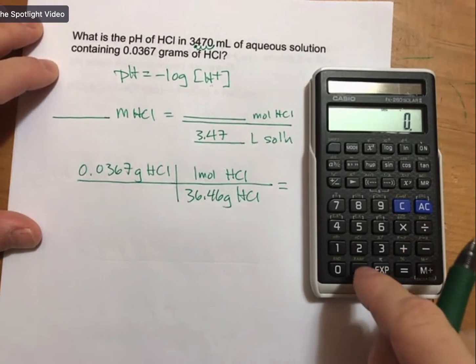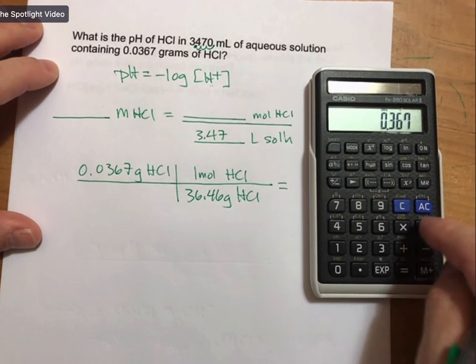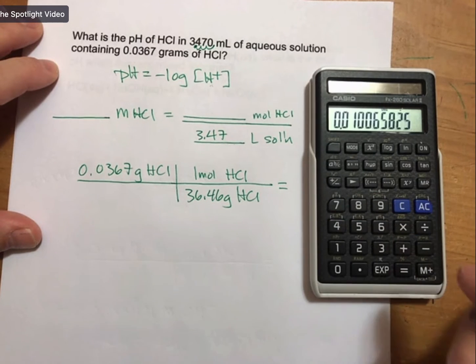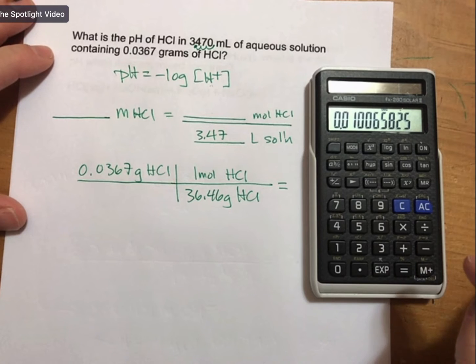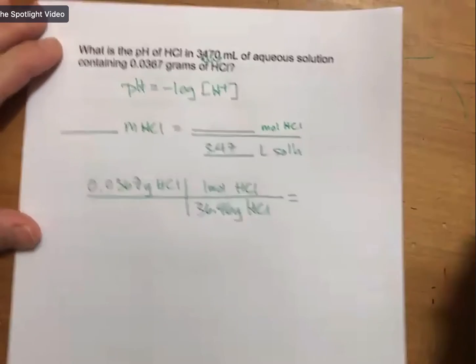And multiplying this out, I get 0.0101 to three sig figs.